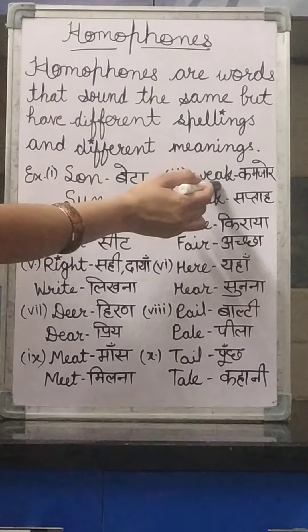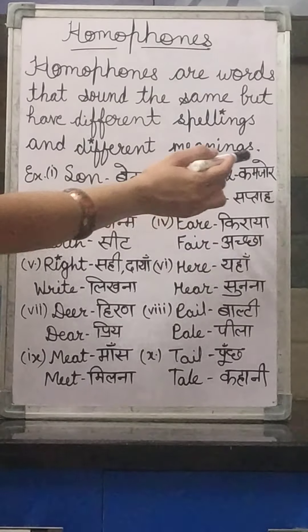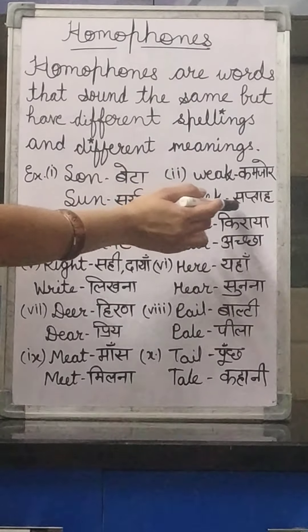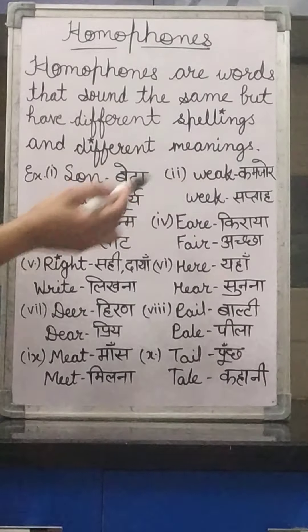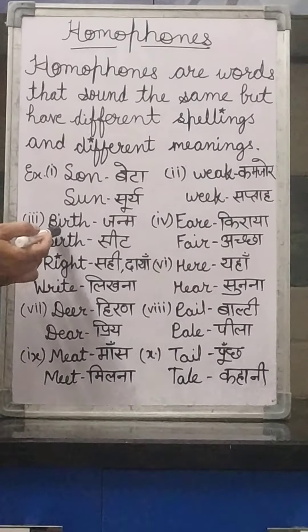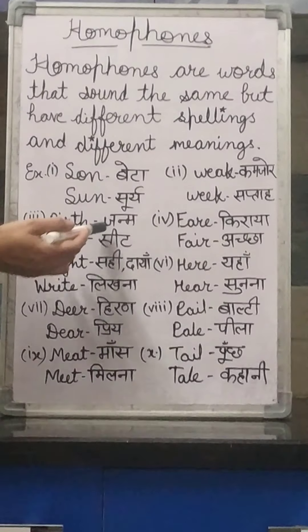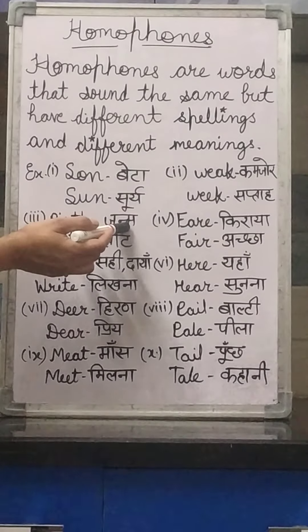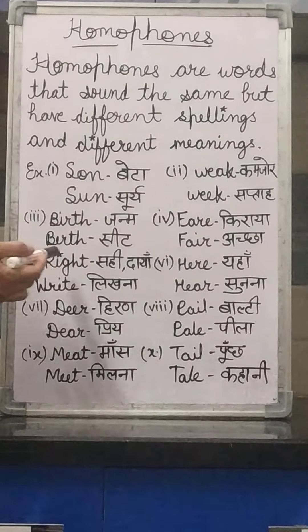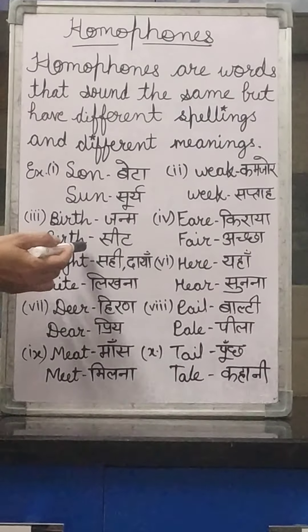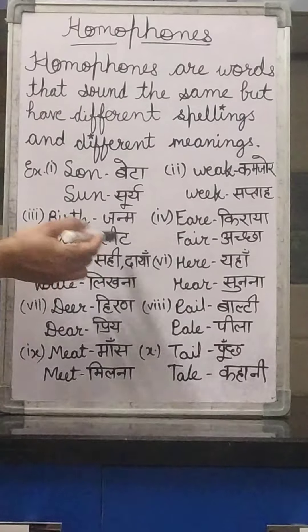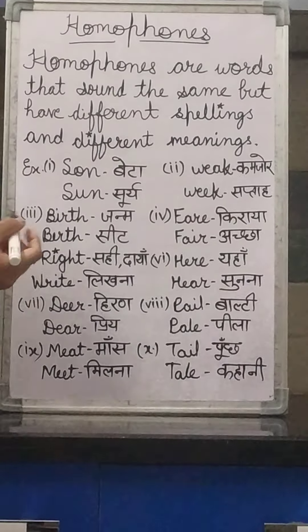Second example: W-E-A-K means 'weak' (kamzor), and W-E-E-K means 'week' (saptah). Third example: B-I-R-T-H means 'birth' (janam), and B-E-R-T-H means 'berth' (seed/berth).